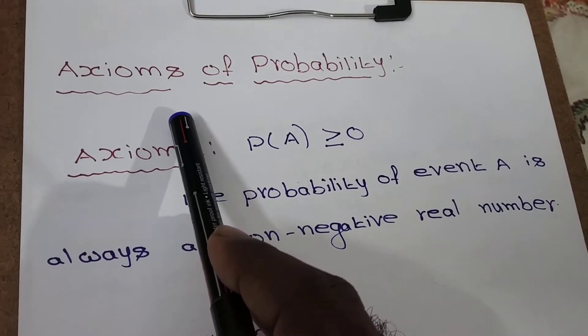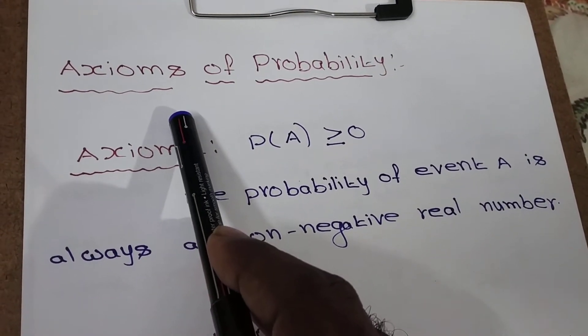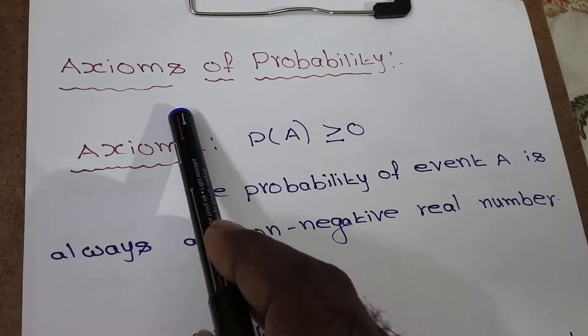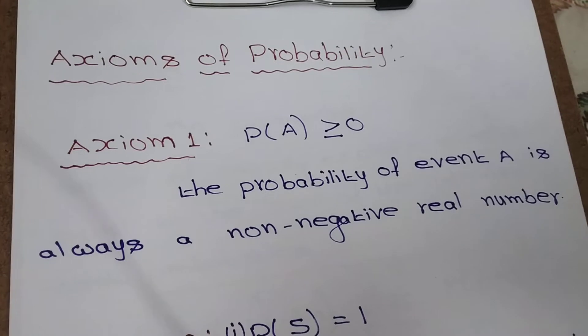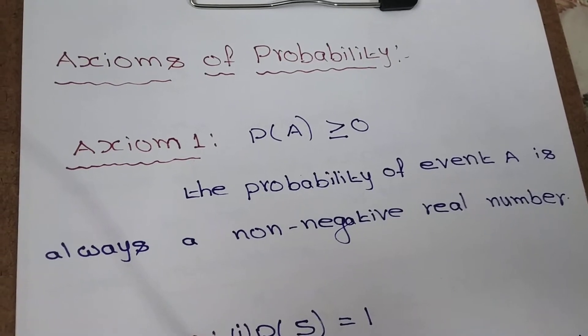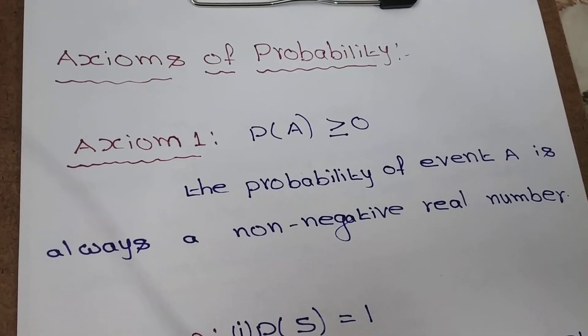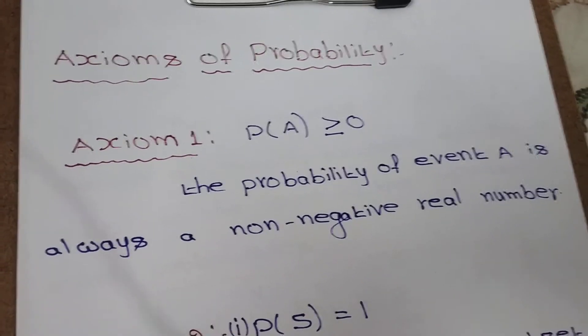Hi, today's topic is axioms of probability. What are axioms? Axioms means rules.